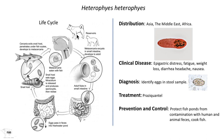Dogs and cats serve as reservoir hosts as well, the same as for Clonorchis and Opisthorchis. Heterophyes heterophyes is found throughout Asia, the Middle East, and Africa — a wider distribution than Clonorchis. Clinical signs and symptoms include upper digestive tract discomfort, fatigue, tiredness, weight loss, diarrhea, headache, and nausea.